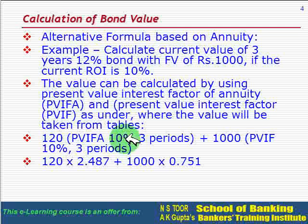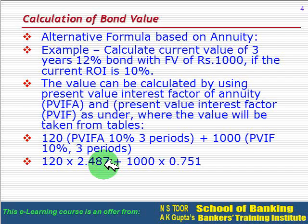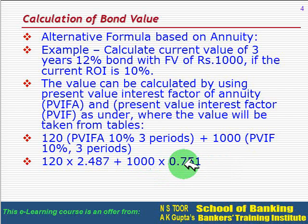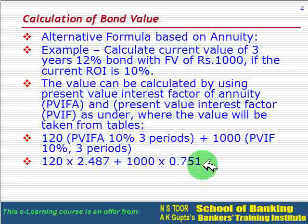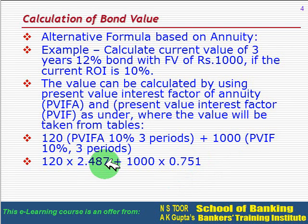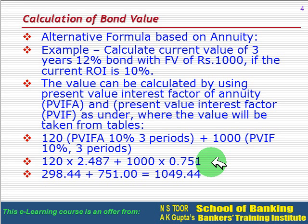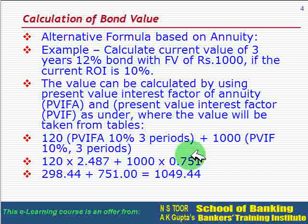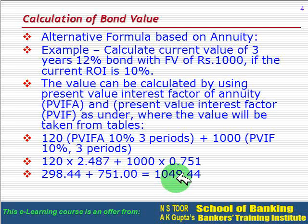The PVIFA factor at 10 percent for three years is 2.487, and the PVIF for 1000 at three years is 0.751 — both available from factor value tables. The value of the annuity component and the lump sum component are computed separately and then added. The total value comes to rupees 1049.44, the same result obtained by the direct discounting method.